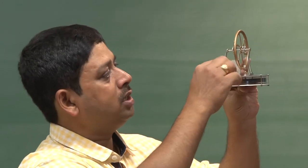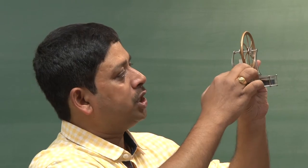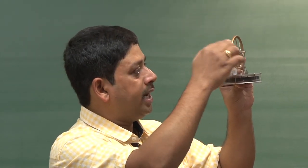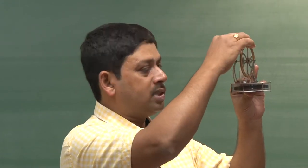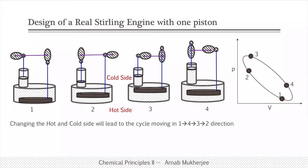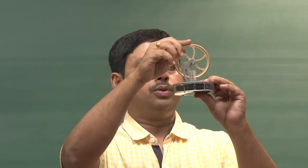The displacer changes position because the piston is going up and down. The power part — where the piston pushes up — creates the momentum which carries the complete cycle. The PV diagram looks like an ellipse: one to two is isothermal compression, two to three is approximately constant volume, three to four is expansion, and four to one is again approximately constant volume. However, since it is not an ideal engine, these steps are not perfectly constant-volume.